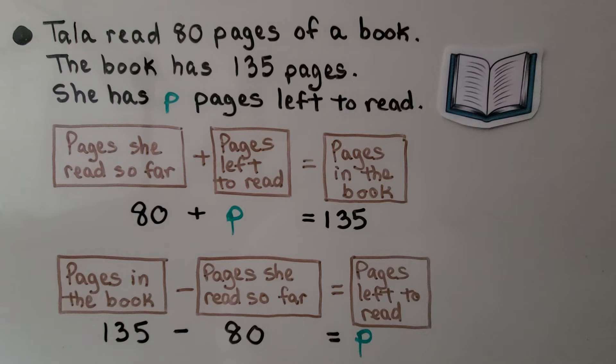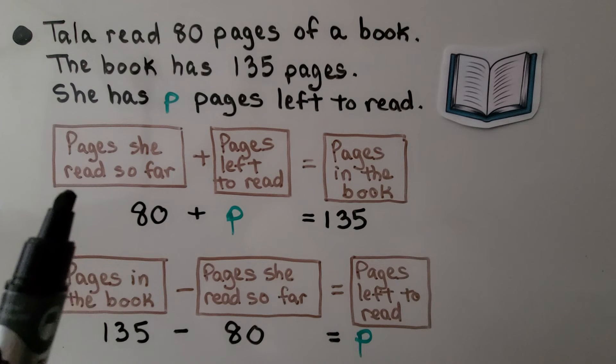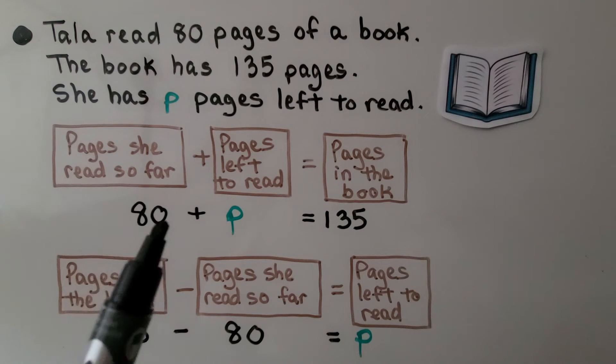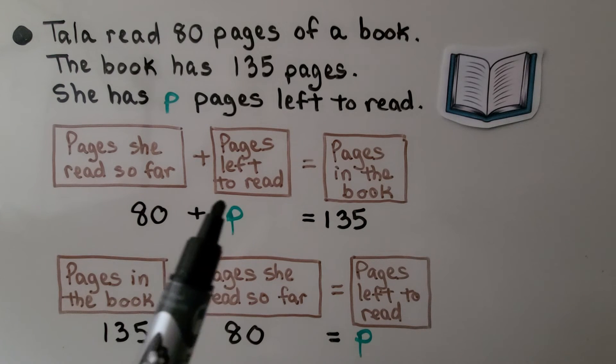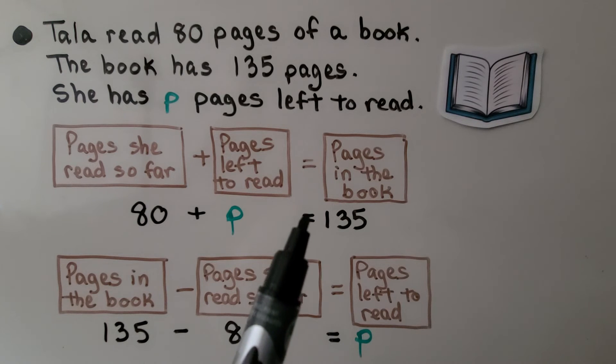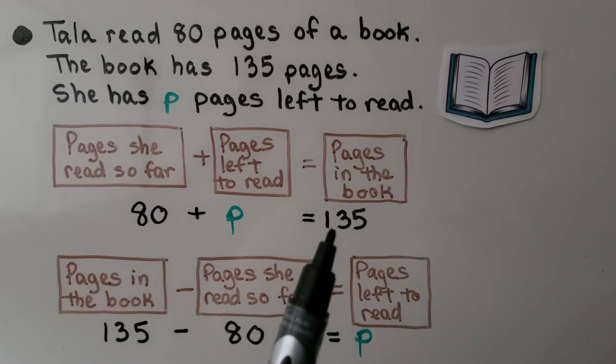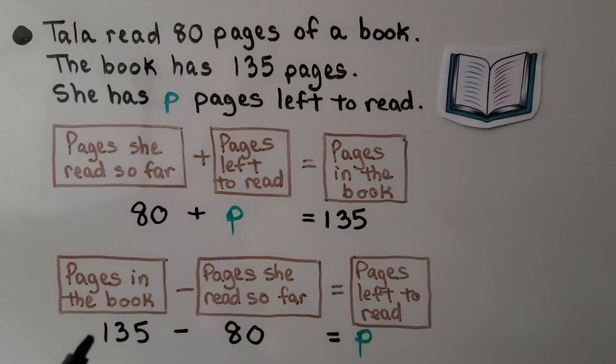Tala read 80 pages of a book. The book has 135 pages. She has P pages left to read. We can write this as an addition equation with the pages she has read so far, the 80, plus some unknown amount of pages left to read, is equal to the total number of pages in the book, the 135. Or, we can write it as a subtraction equation, as the pages in the book minus how many she read so far is equal to how many she has left to read.